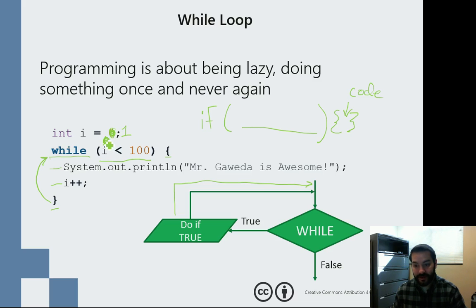So is i, again this time, one true? Yes, it is. Or it is i, which equals one less than 100. Is that true? Yes, it is. We execute this line of code again. So we then do system.out.println. Mr. Gaweda is awesome. i plus plus. Again, we increment i. i now becomes two. And we go and reassess the conditional loop a second time. We go is two less than 100. We continue to do this over and over again.